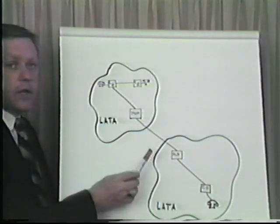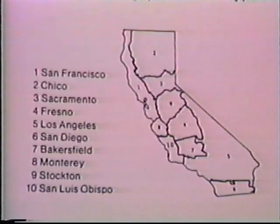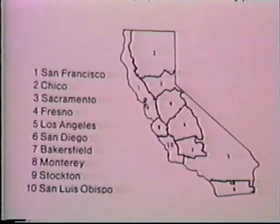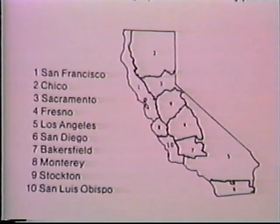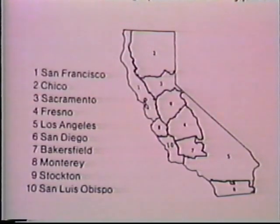When you leave the LATA, that's where competing services such as AT&T, MCI, or Sprint are available. The state of California is divided up into 10 LATAs, each with one or more operating telephone companies. Within the LATA, services are provided only by the local phone company. However, for long distance between LATAs — say, San Francisco to Sacramento — you could use a competing long distance carrier. But a call from San Francisco to San Jose, which is in the same LATA, must be carried by Pacific Telephone or a local telephone company.